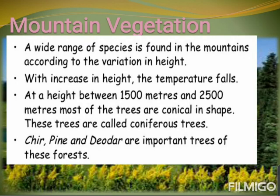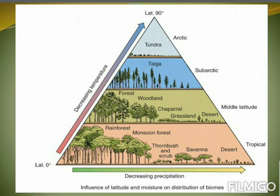Now talking about the mountain vegetation, a wide range of species is found in the mountains according to the variation in height. With increase in height, the temperature falls. At a height between 1500 meters and 2500 meters, most of the trees are conical in shape. These trees are called coniferous trees. Cedar, pine, and deodar are important trees of these forests.